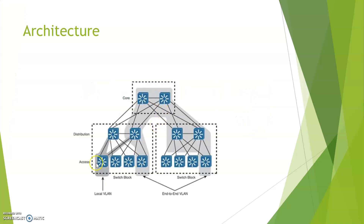This is the architecture containing access switch, distribution switch, and core switch. This is the access layer, this is the distribution layer, and this is the core layer. So this is a local VLAN — local VLAN means the VLANs are localized to a single switch and will not span the entire network. But in the case of end-to-end VLAN, it is spread across the entire network.